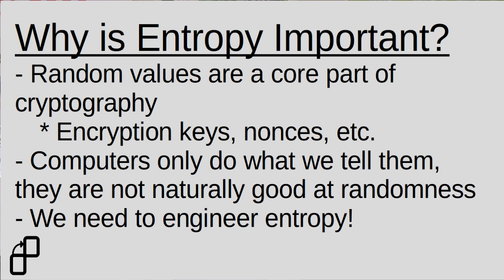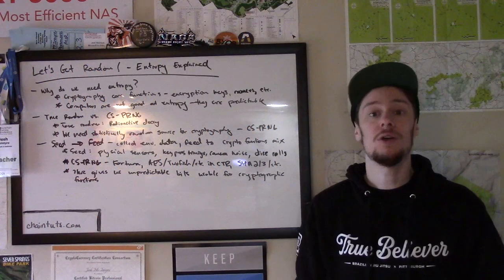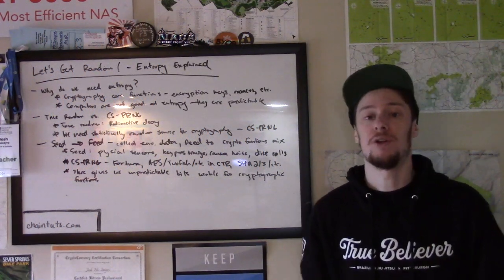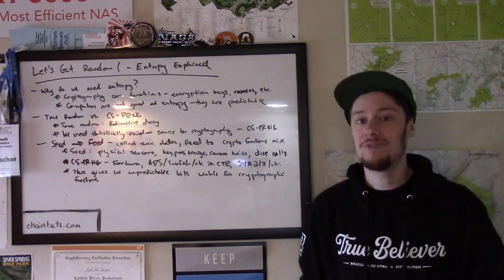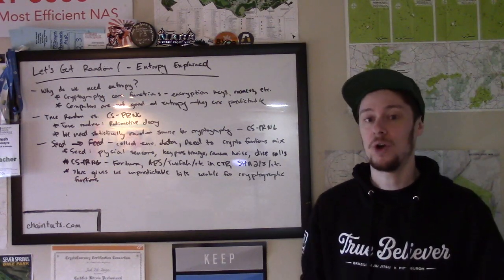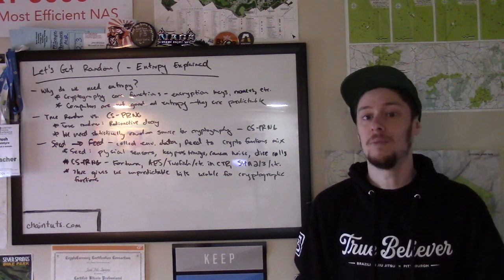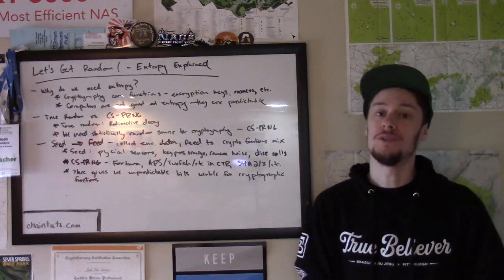Computers and people are not actually very good at randomness. We're very predictable, as are our computing devices that do every single instruction that you tell them in a very predictable way. So we have to engineer entropy in a smart way that's statistically random in order for our modern encryption to be safe and usable.